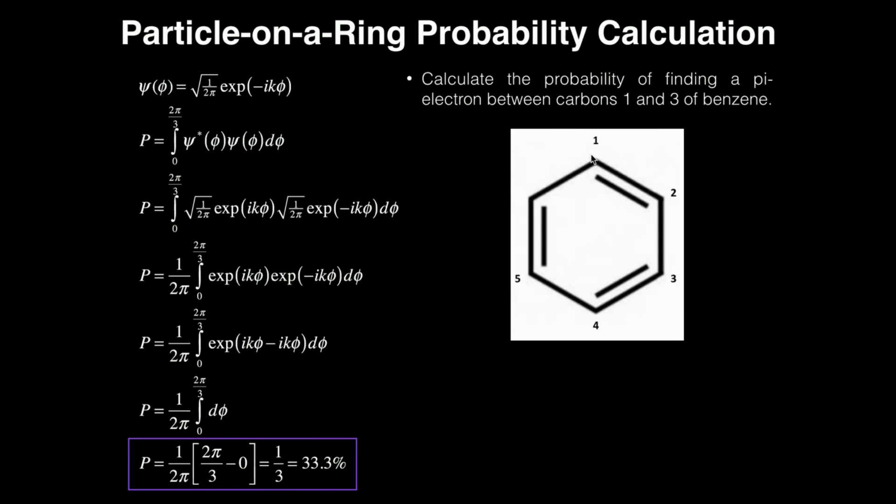So when you're dealing with these aromatic compounds, they can actually be fairly simple and straightforward problems, because you can actually use logic to figure out if your answer is right. So what's the probability of finding it between one and three? Well, it should be one-third, because that's one-third of the length around the ring, right?